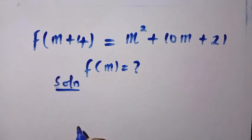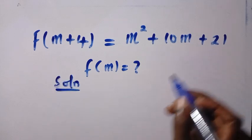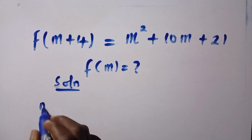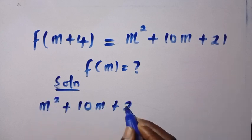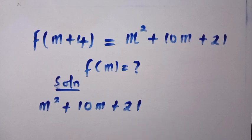So we'll consider the solution here. Let's consider from this left hand side, which is m squared plus 10m plus 21. We have this as a quadratic equation.